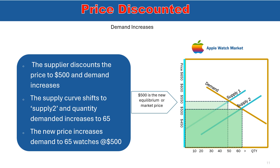In a perfectly competitive market, efficiency occurs when changes in the supply price increase and so maximize consumer and producer surplus. This ensures goods are produced at the lowest cost and consumed by those prepared to pay the market price, maintaining a balance between supply and demand.